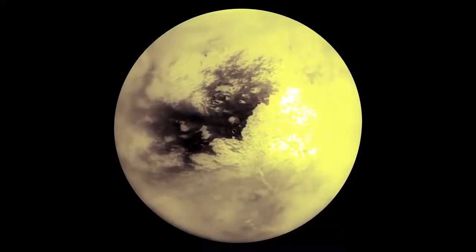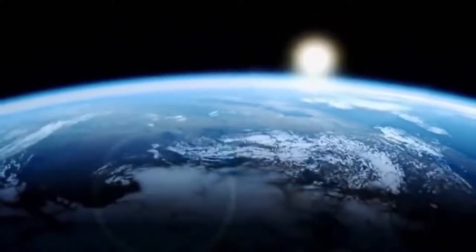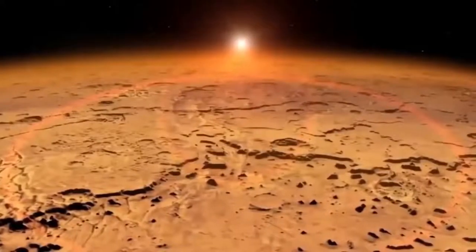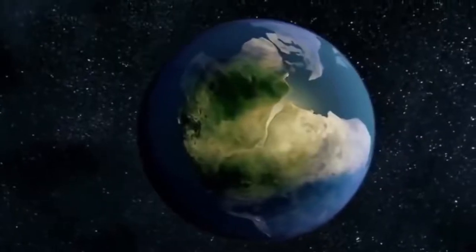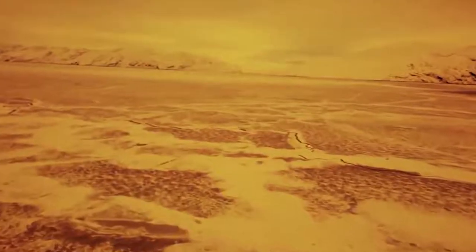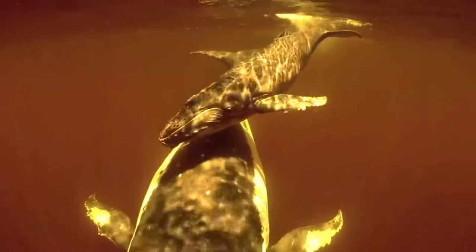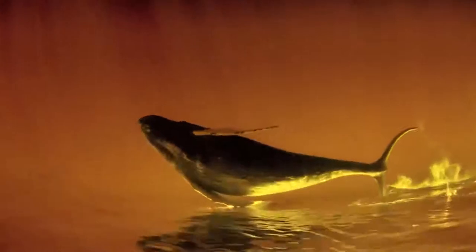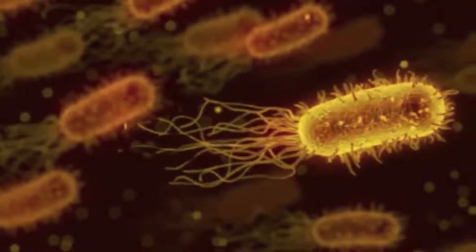Some scientists have regarded Titan as a deranged version of the Earth, and at the same time say it resembles an infant Earth in many ways before life evolved and irrevocably changed our planet. Titan's ocean sits below a thick ice layer and is believed to have favorable conditions for life, even though we're talking about life that exists in extremely harsh conditions.